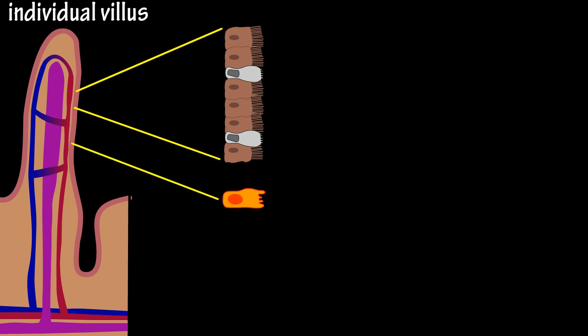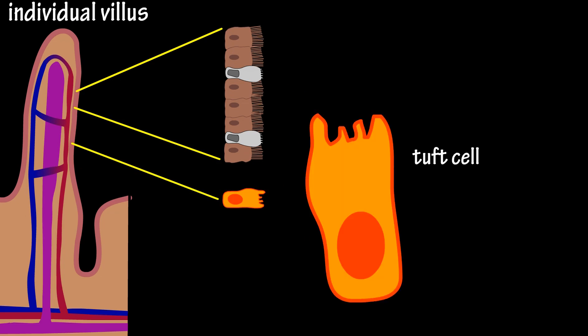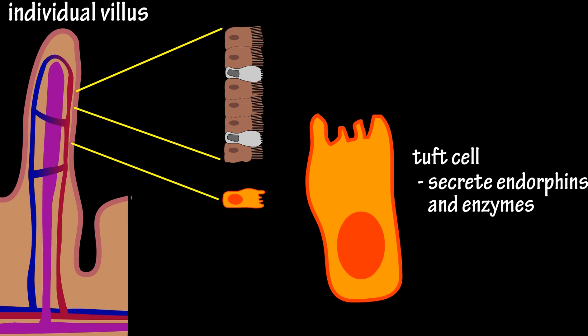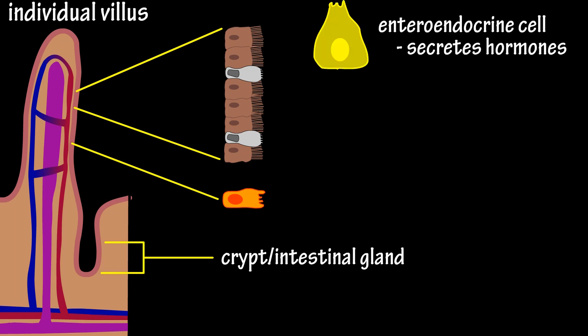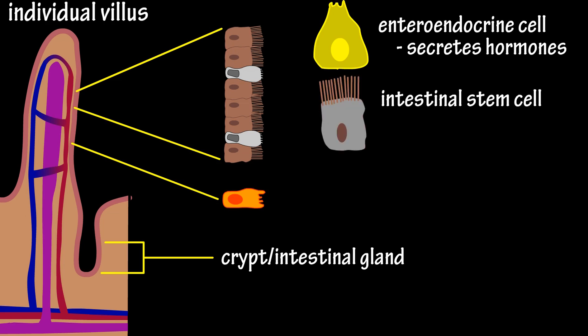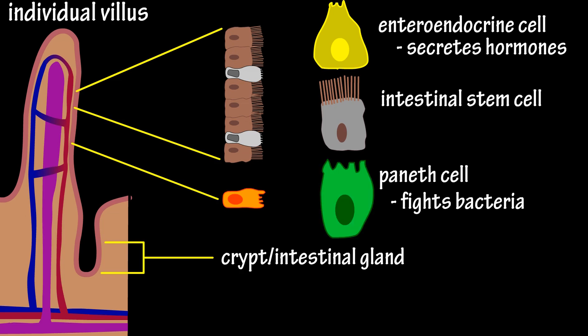Scattered throughout the surface of a villus are also tuft cells, which are believed to secrete endorphins and enzymes that make prostaglandins, which are a type of fat that enhances the immune system. Deep in the valleys between the villi are depressions called crypts, or intestinal glands. These crypts contain enteroendocrine cells that secrete hormones, intestinal stem cells which produce daughter cells that push upwards and become enterocytes, and Paneth cells which protect against bacterial growth.